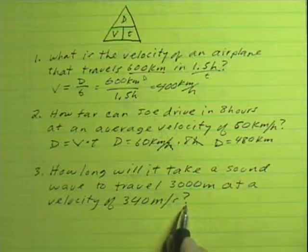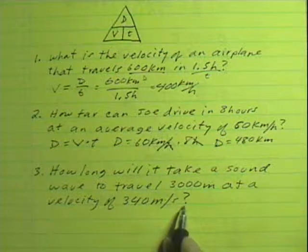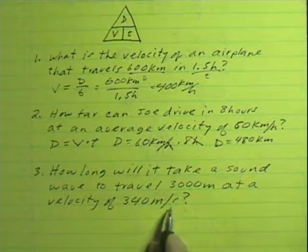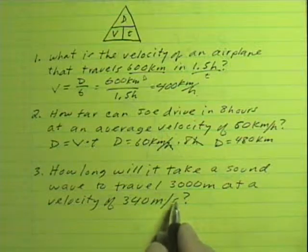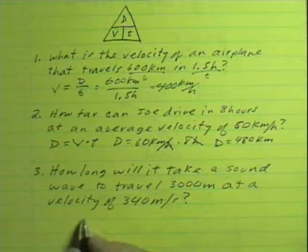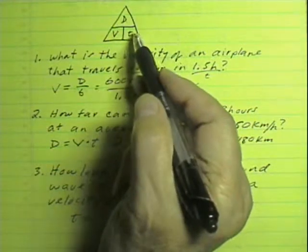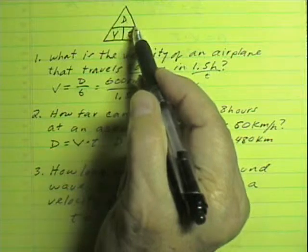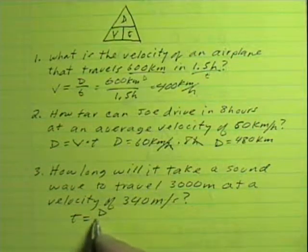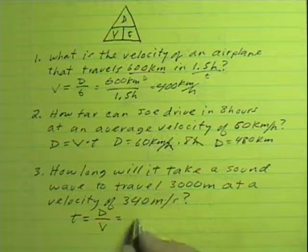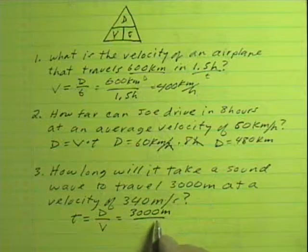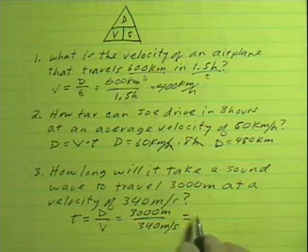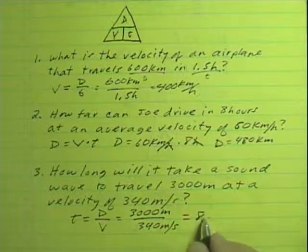The third problem asks us to find time, so go ahead and pause the video and solve it. In this case, according to the magic triangle, time is displacement divided by velocity. The displacement is 3000 meters divided by the velocity of 340 meters per second, which works out to 8.8 seconds.